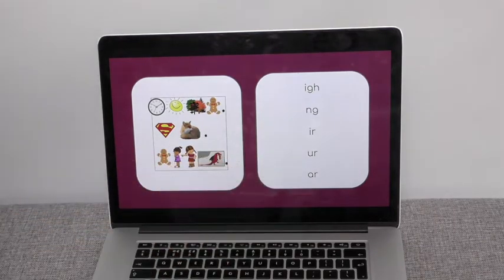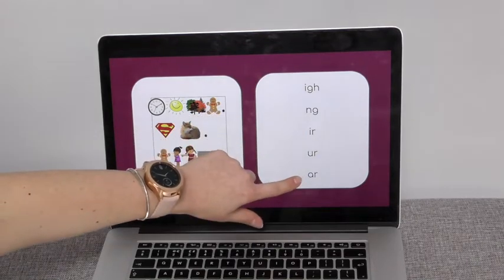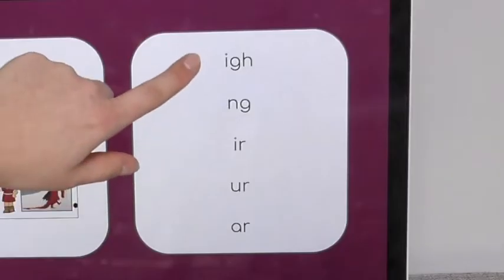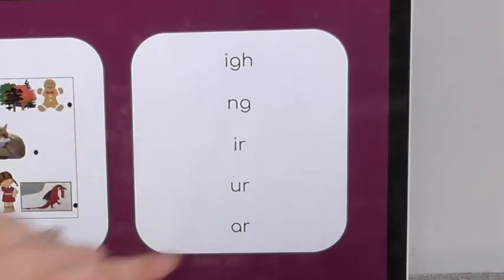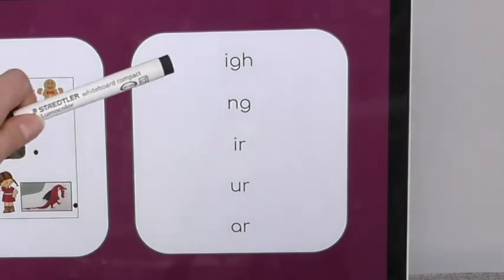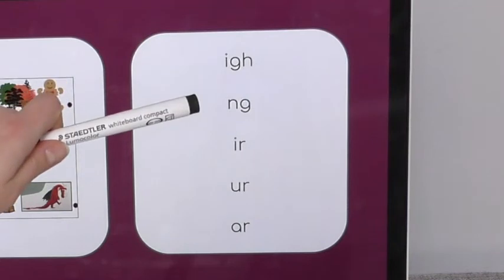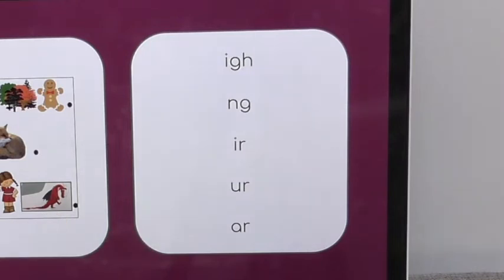This one at the bottom is 'er.' It does sound quite similar, but they are different — we've got a different sound. We've got er, er, er. I-N-G, er, er, er. With your child, can you have a look at these sounds and practice them? Going to do them out of order this time so you can practice with your children.